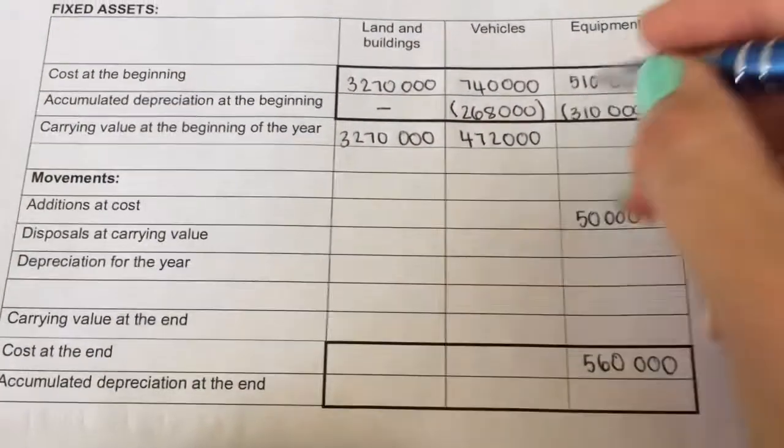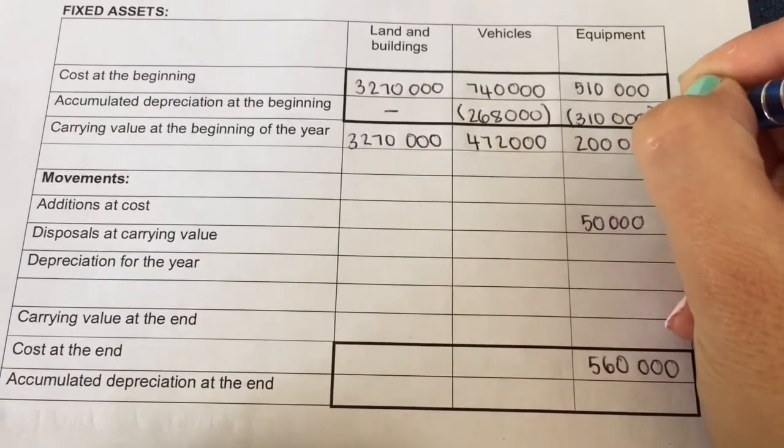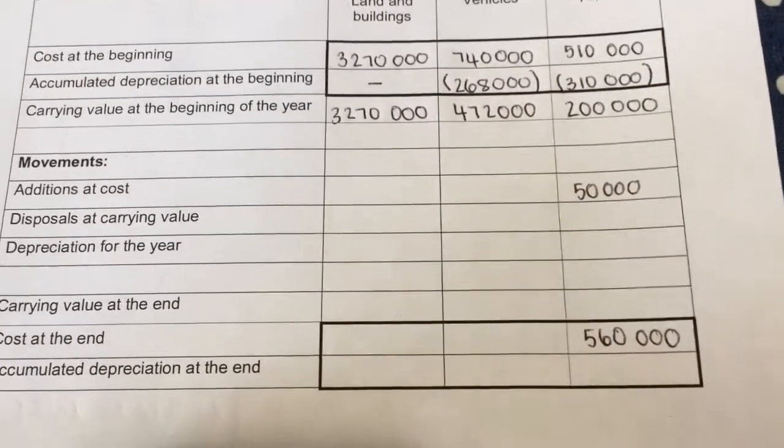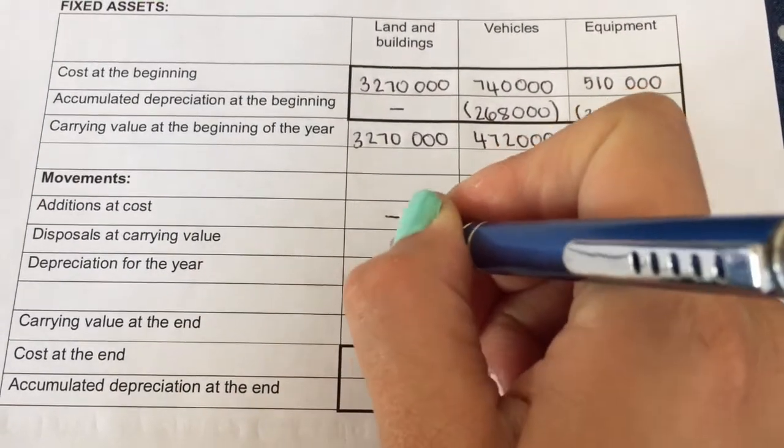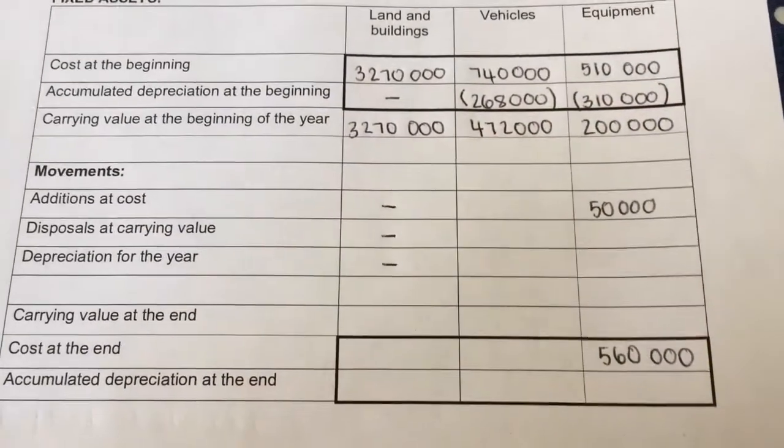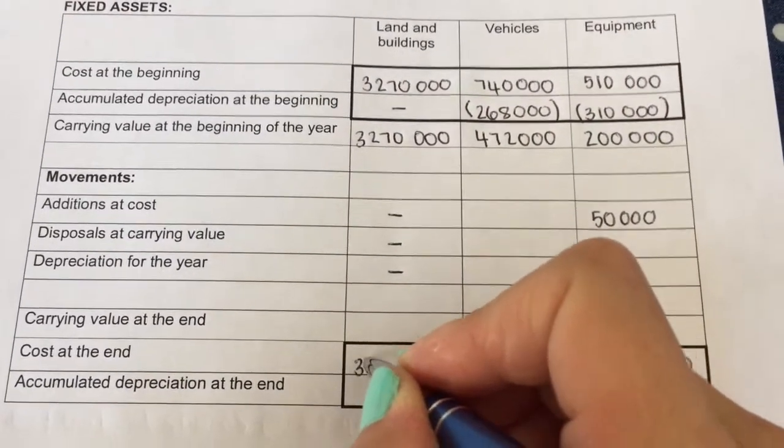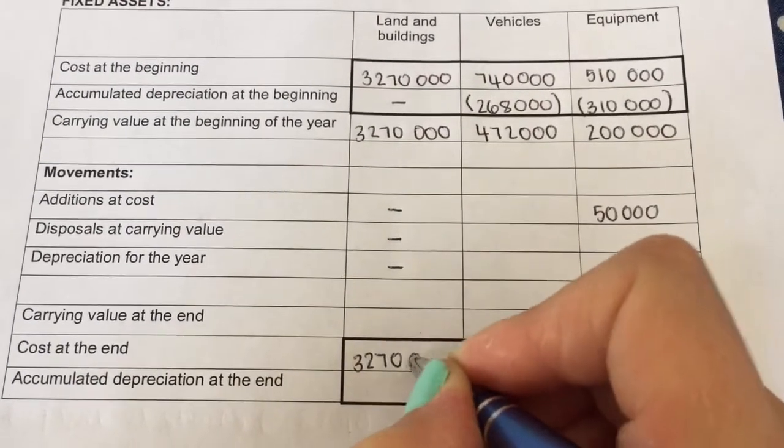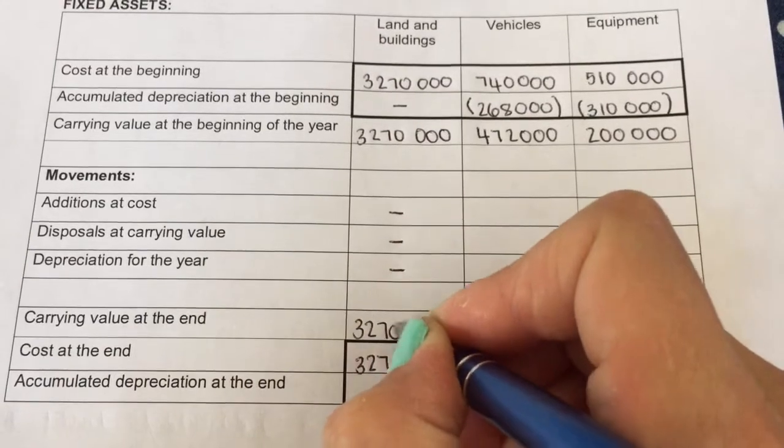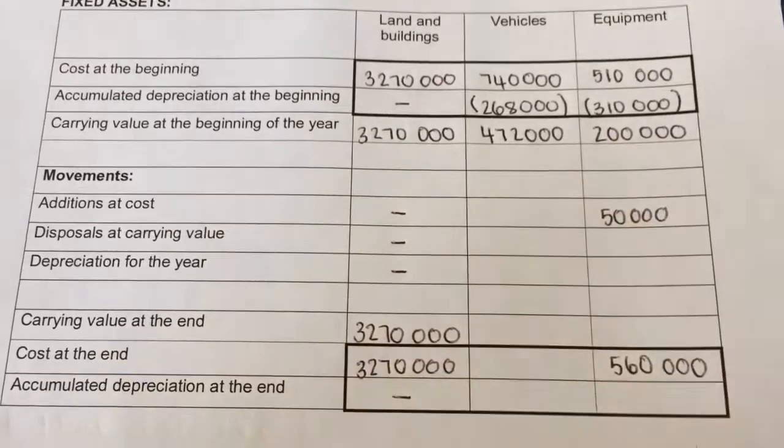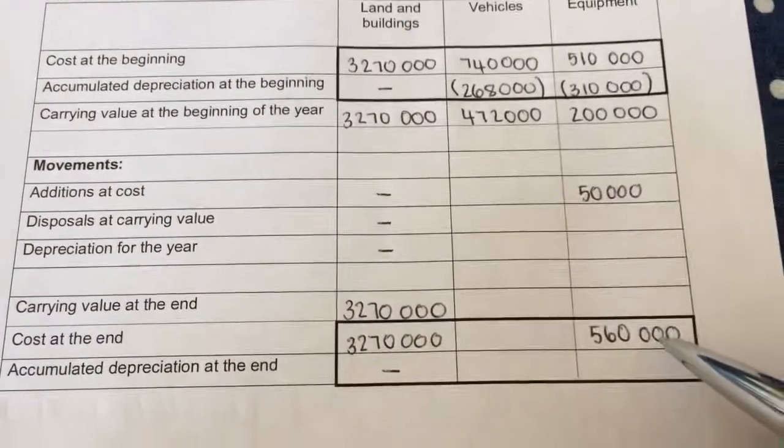Over there I've got 200,000. Let's finish land and buildings. Nothing happened, they didn't say that I bought anything, so I just get my cost at the end of the year and my carrying value at the end of the year. Then I'm quickly going to tackle equipment because there's no selling of a vehicle or any asset.